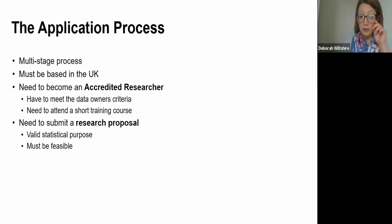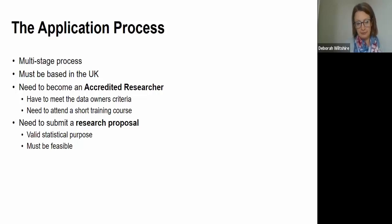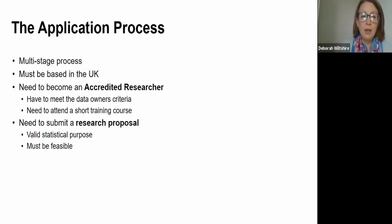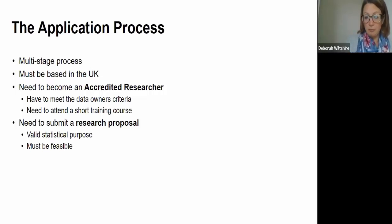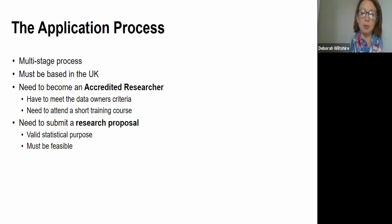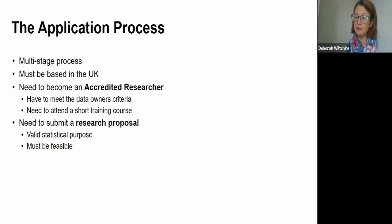The application process is a multi-stage process. At the moment you must be based in the UK to apply. There are two stages: first, you need to become an accredited researcher, which involves meeting the data owner's criteria and attending a short training course. Then you will need to submit a research proposal. You have to show that your research will have a valid statistical purpose and that it is feasible.